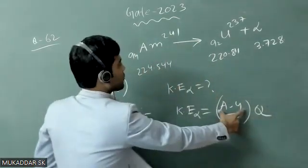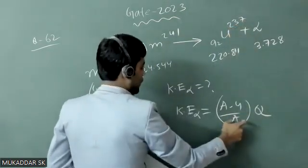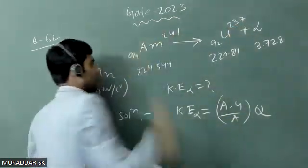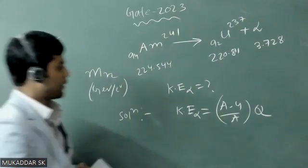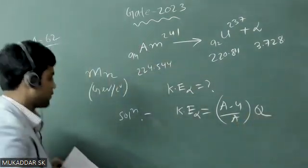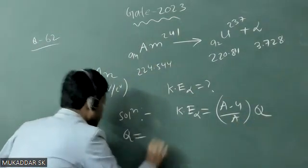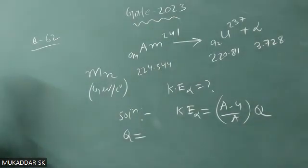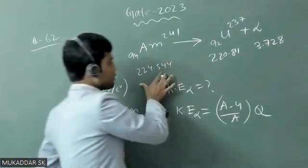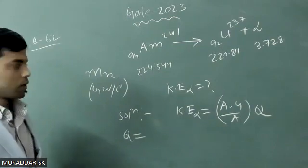A minus 4 is the mass of the daughter and A is the mass number of the parent, and Q that we have to calculate. Q is nothing but mass defect, mass of reactant minus mass of product.